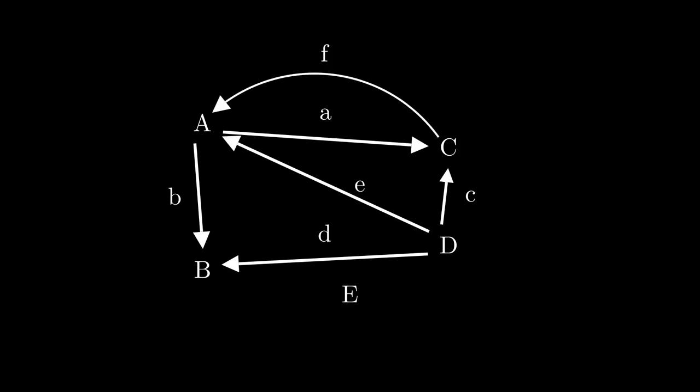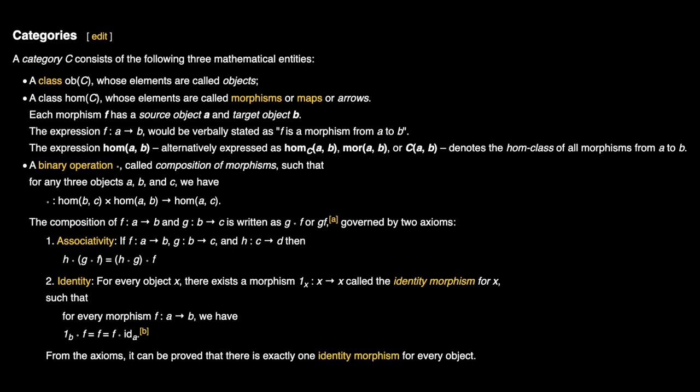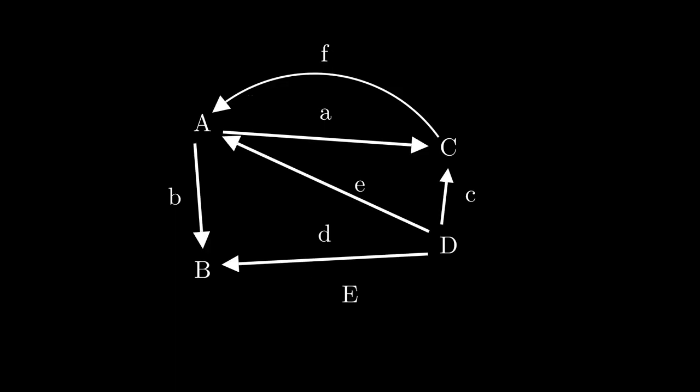The second one is usually called a class of morphisms, or as I prefer, a class of arrows. What arrows do? They link things, they link objects. There are some rules to these arrows to not let things go too crazy, but this is the essence.